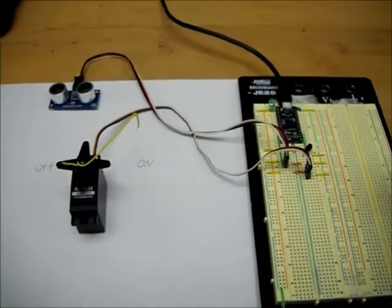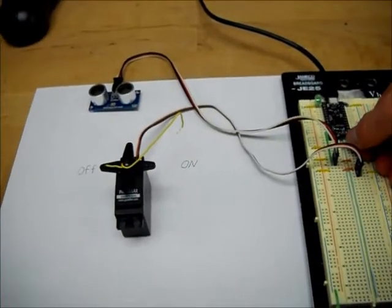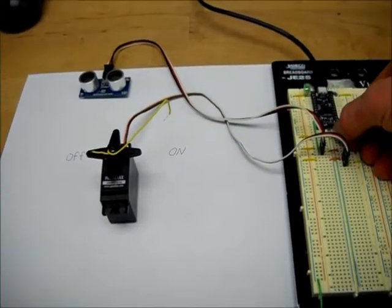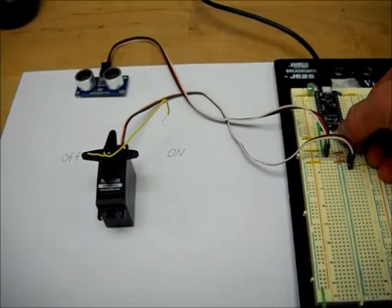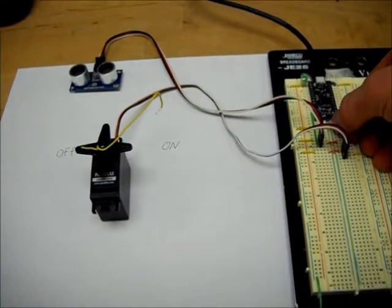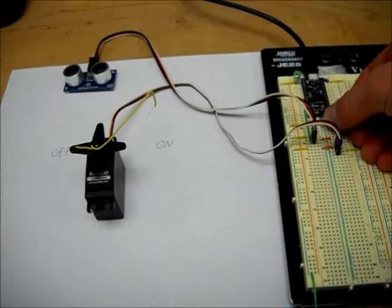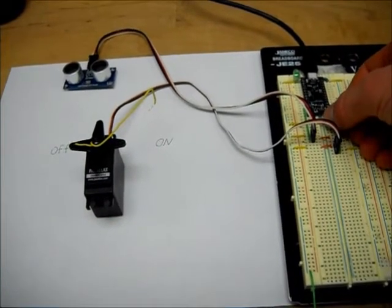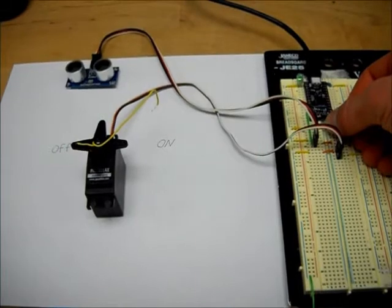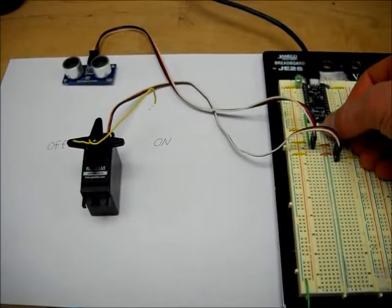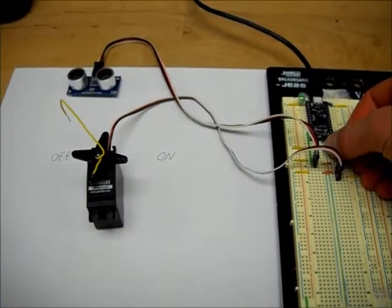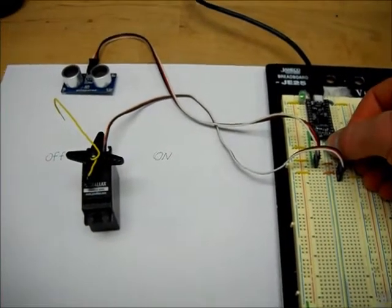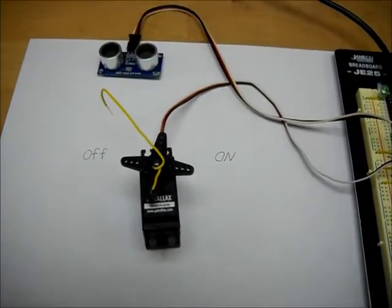I'm going to heat up the temperature sensor with my finger and you'll see the device turn off. As you can see, I've heated up the temperature sensor and the actuator has turned off.